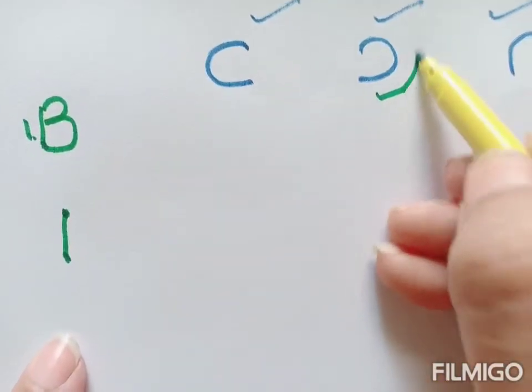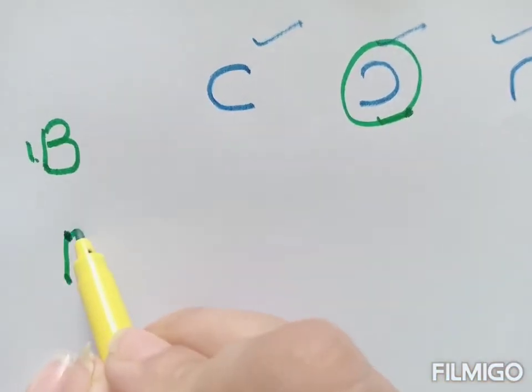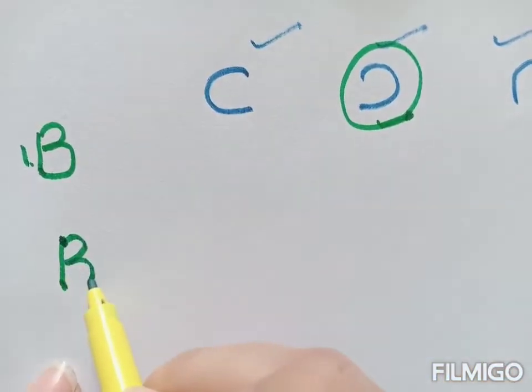And then now let us see this curve. Okay, so the child is going to put two times this curve.